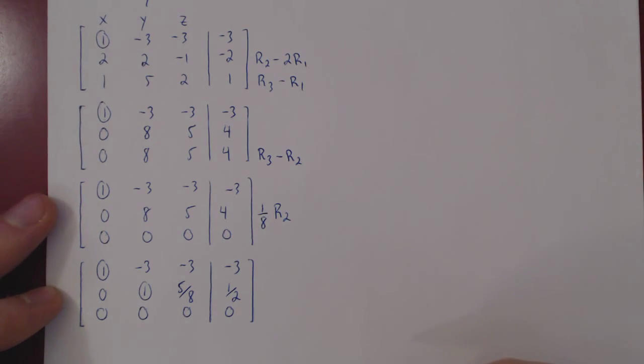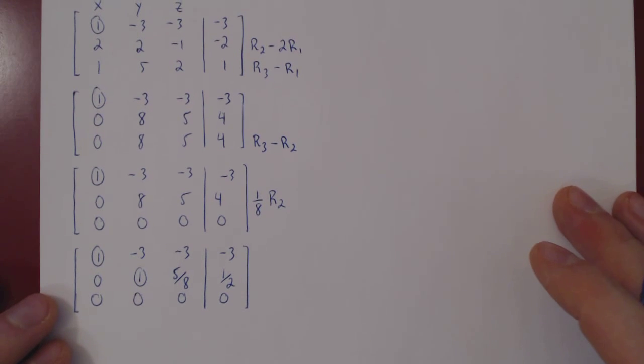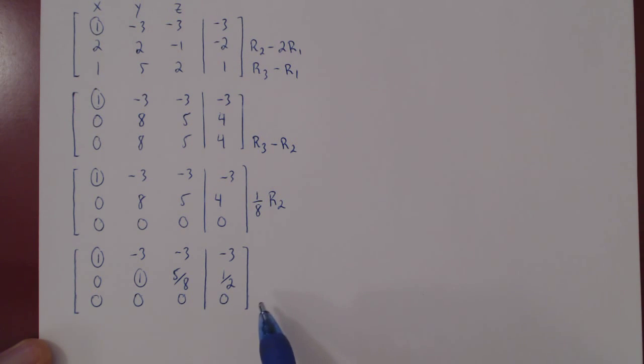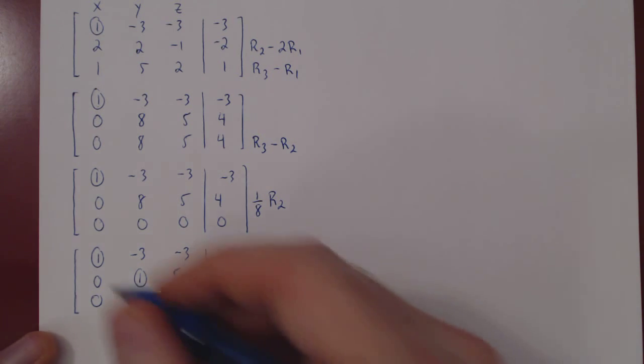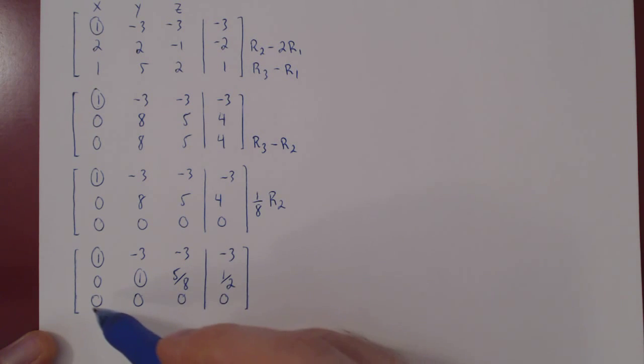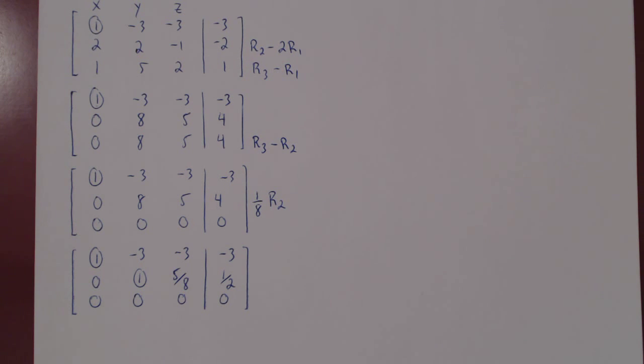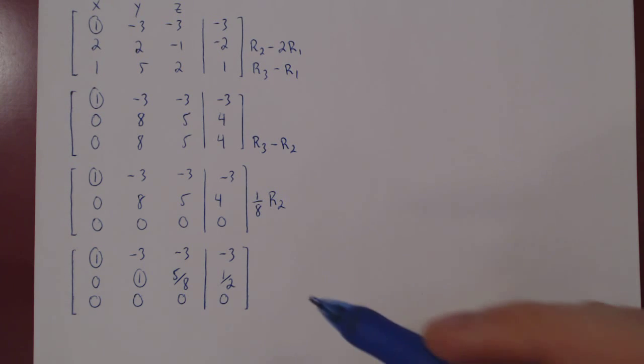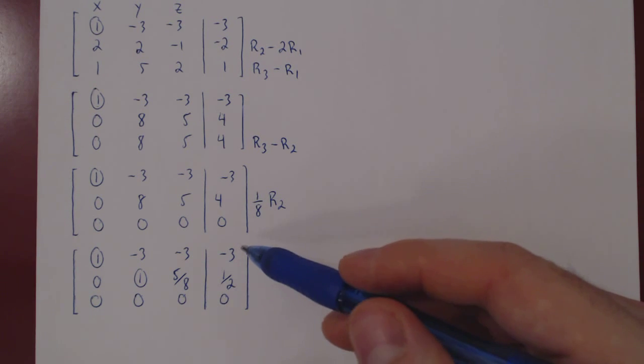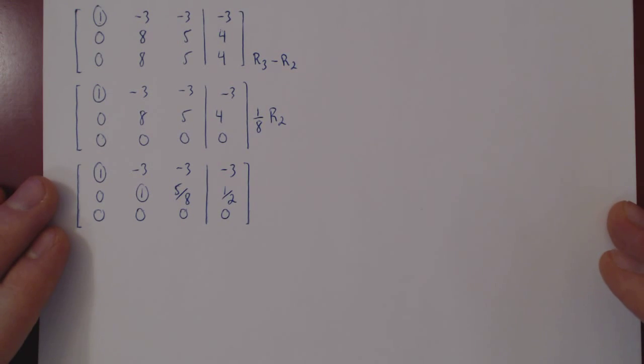And once again, if you notice, we are now done with Gaussian elimination. As the bottom row consists of all zeros, we cannot get a third leading one, so x and y will be leading variables, z will be a free variable. The system is consistent, therefore we have an infinite number of solutions. And because we have now a free variable in z, we will now use, instead of backward substitution, we will use Gauss-Jordan elimination. As we've said in the previous video, this is the end of Gaussian elimination. This matrix is in row echelon form, and now we apply Gauss-Jordan elimination.